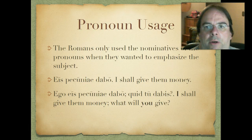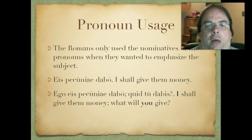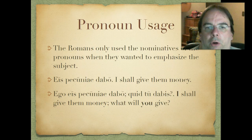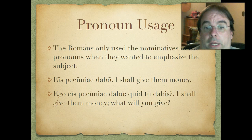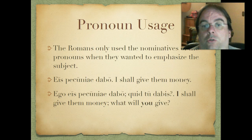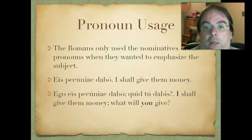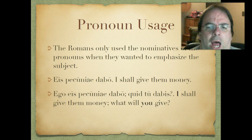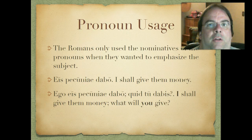The Romans only use the nominatives of the pronouns when they want to emphasize the subject. For example: eis pecuniam dabo — I shall give them money. We could add the personal pronoun: ego eis pecuniam dabo — I shall give them money. Then we might say quid tu dabis — what will you give? Those pronouns give it a little more emphasis — you're saying, well, I'm going to do this, what are you going to do?